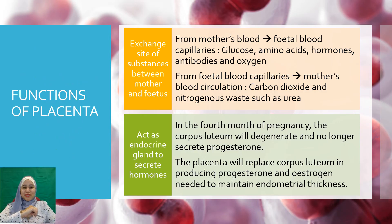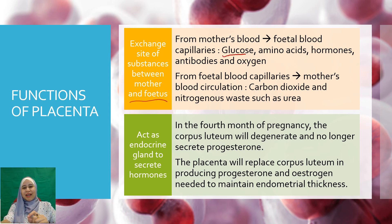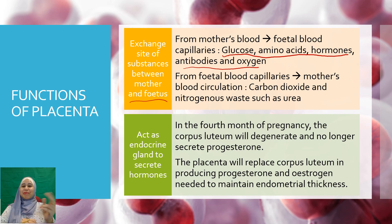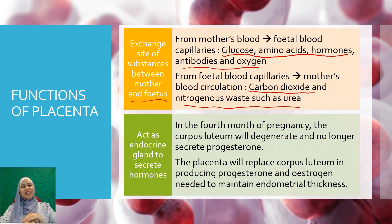There are two main functions of the placenta. The first one is as the exchange site of substances between the mother and the fetus. There are two pathways: from the mother's blood to the fetus' blood capillary, carrying substances such as glucose, amino acids, hormones, antibodies, and oxygen; and from the fetus' blood capillary to the mother's blood circulation, carrying carbon dioxide and nitrogenous waste such as urea.